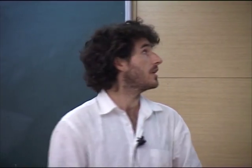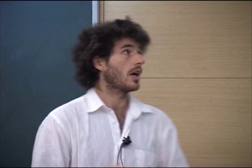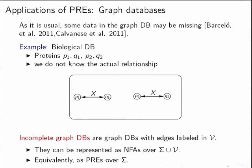This is how you naturally model missing information in a graph database. It's just an edge-labeled graph where labels can also be variables — essentially an NFA over the combined alphabet. From here, you can start using parameterized regular expressions.